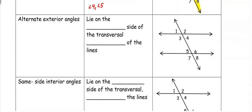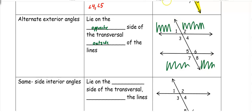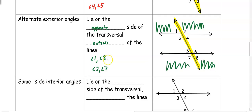Another type is alternate exterior angles. Alternate exterior angles lie on opposite sides of the transversal, but this time they are outside the lines — above and below in this case. The transversal intersects both of those lines. Examples of alternate exterior angles would be angle 1 and angle 8, or angle 2 and angle 7.